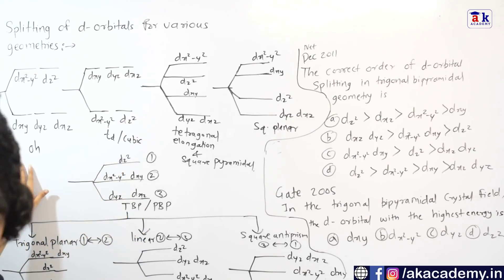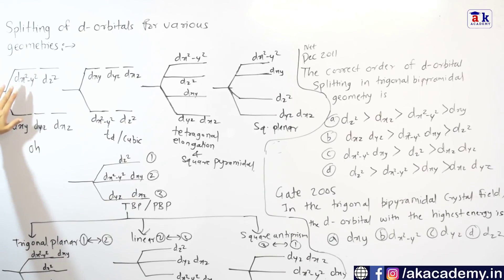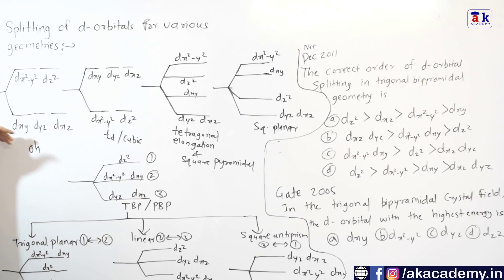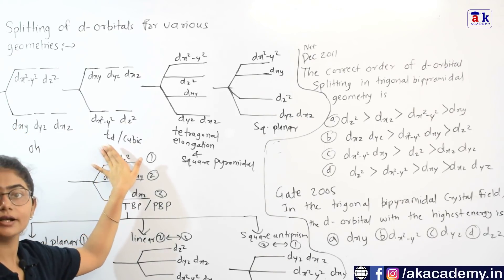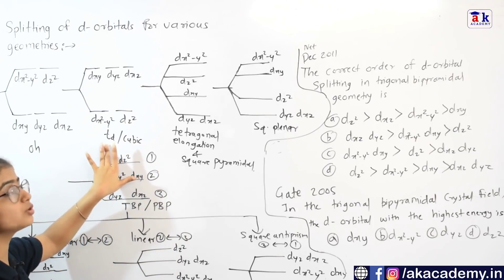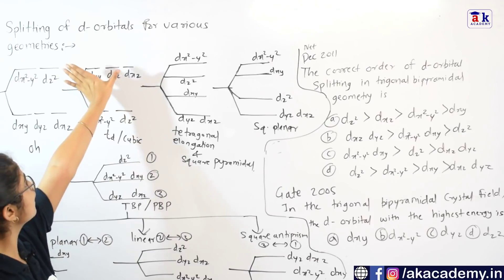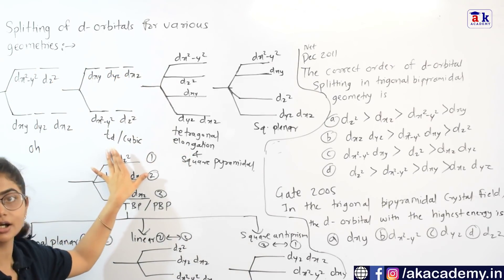For octahedral complexes, the EG orbitals — that is DX square minus Y square and DZ square — are going to be higher in energy, and the T2G orbitals — that is DXY, DYZ, and DXZ — are going to be lower energy. For tetrahedral complexes, the scenario gets completely reversed: those three T2G orbitals are going to have higher energy and the two EG orbitals are going to have lower energy.